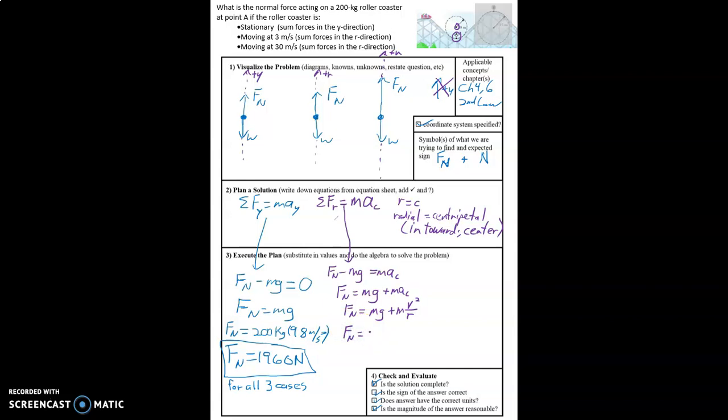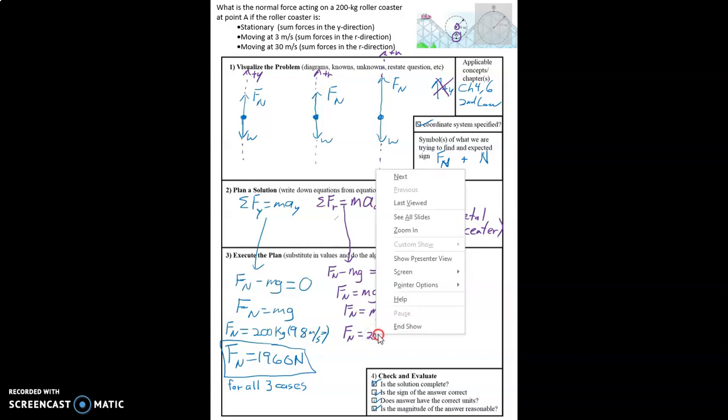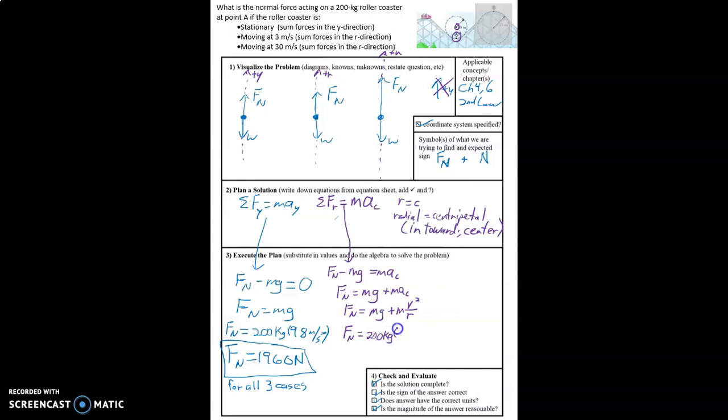And so now, we can fill in the numbers here. So we have 200 kilograms times 9.8 meters per second squared plus 200 kilograms times 10 meters. And that's from the drawing, which is kind of hard to see at this moment.